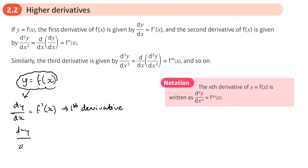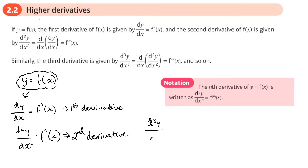If we differentiate a second time, we write it as f''(x) — f double prime of x — that's your second derivative. The second derivative can be used to help you work out whether you've got a maximum or minimum at turning points. And then occasionally we differentiate a third time, which is normally where we want to find where we've got a point of inflection. The alternative way of writing it is shown here.